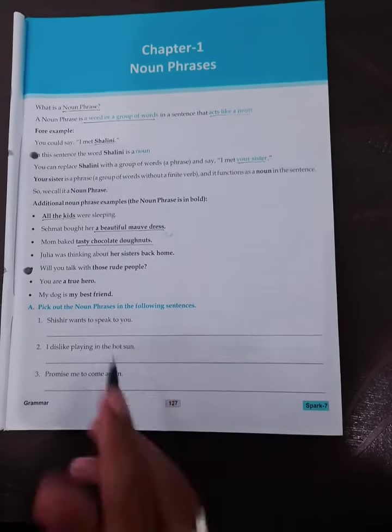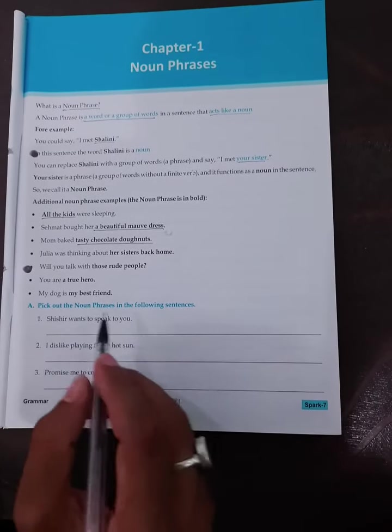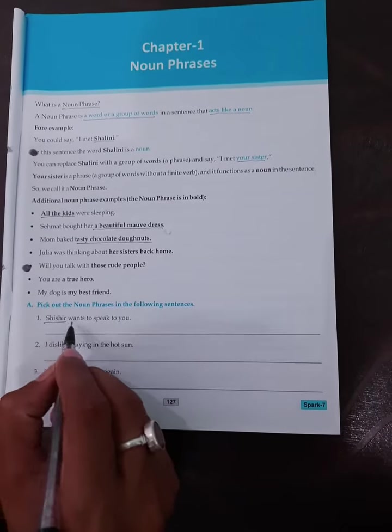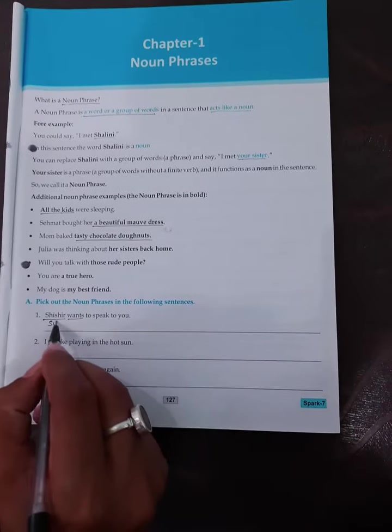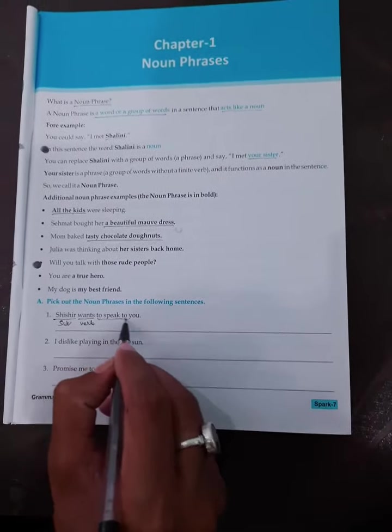Pick out the noun phrase in the following sentences. Sisi wants - Sisi is the subject, wants is the verb, and this is the noun phrase.